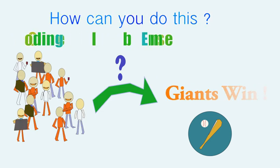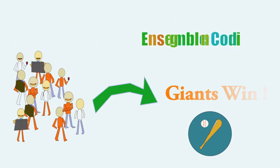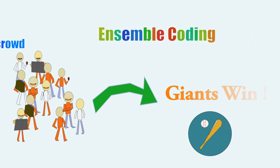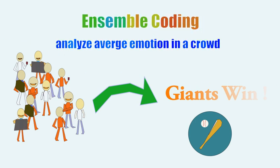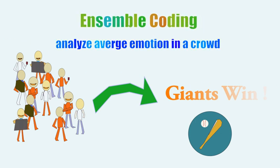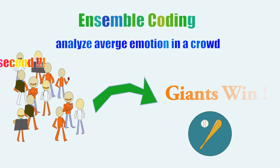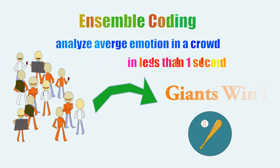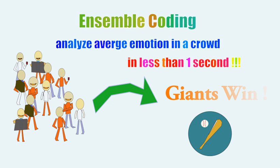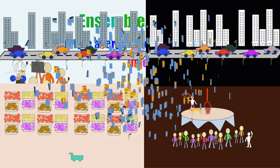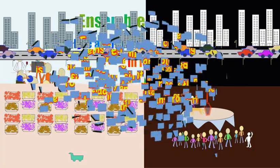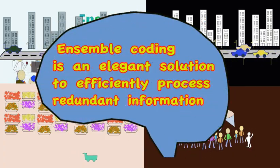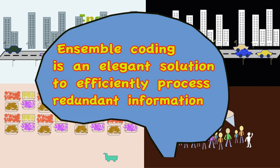There is an interesting visual phenomenon called ensemble coding, which enables us to analyze the average emotion in a crowd and the color of clothing in less than a second. Ensemble coding is an elegant solution to efficiently process redundant information in our visual field.